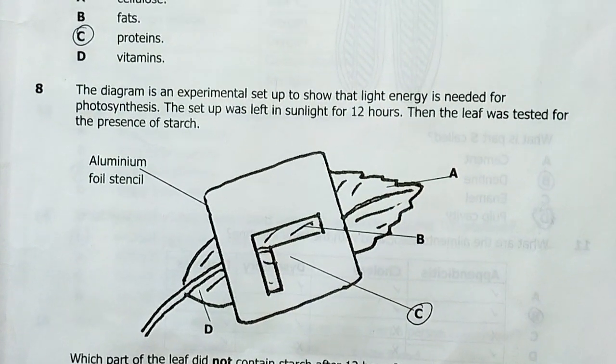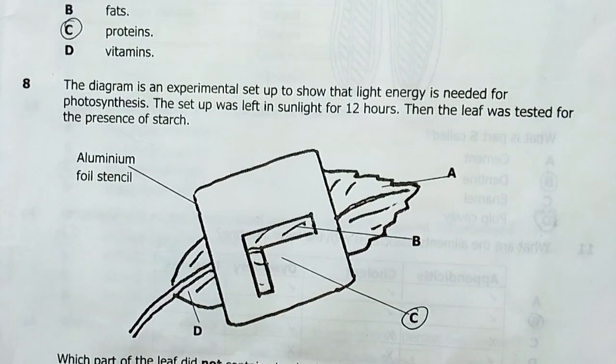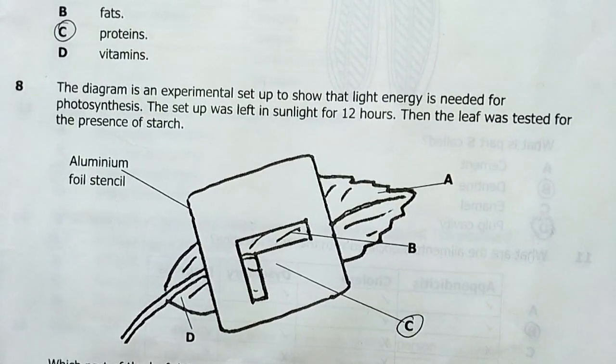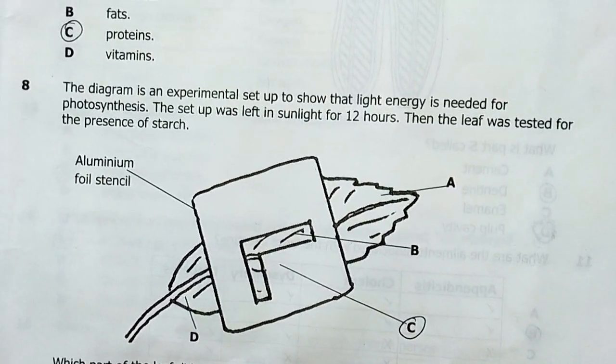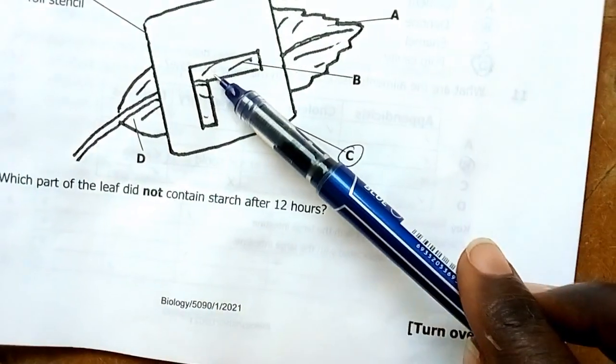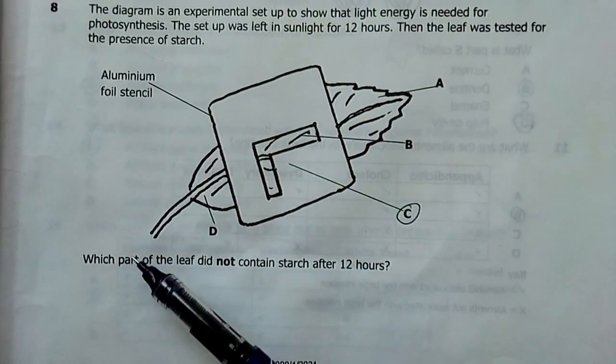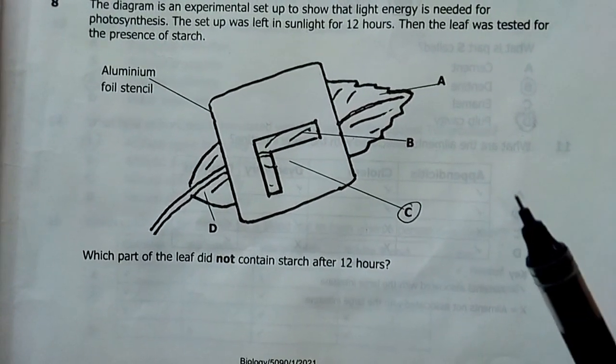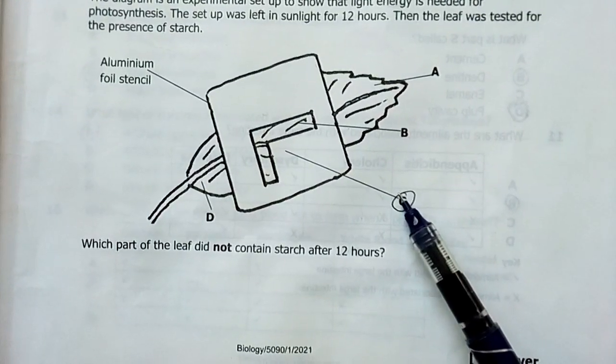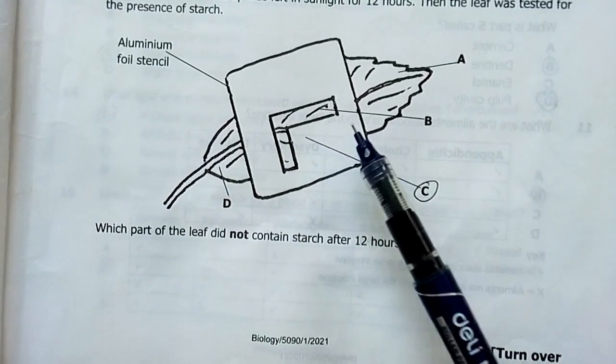Number eight, the diagram is an experiment set up to show that light energy is needed for photosynthesis. The setup was left in sunlight for 12 hours. Then, the leaf was tested for presence of starch. Light is reaching certain parts. Which part of the leaf did not contain starch after 12 hours? The answer is C. This part covered is C.